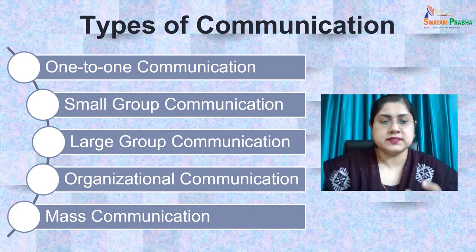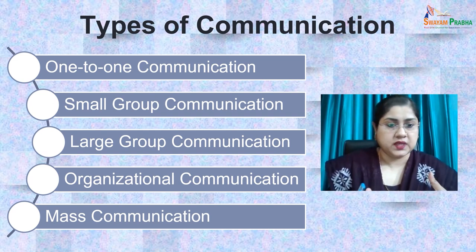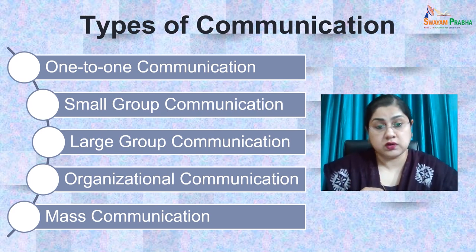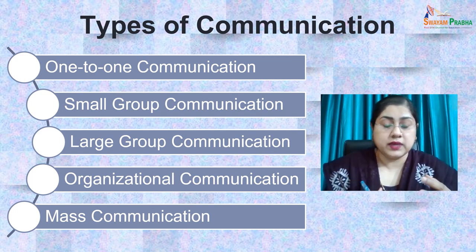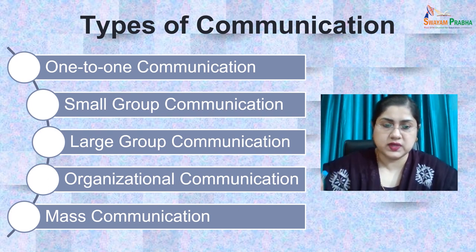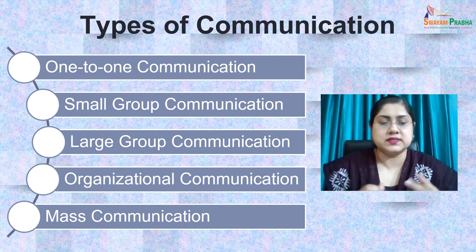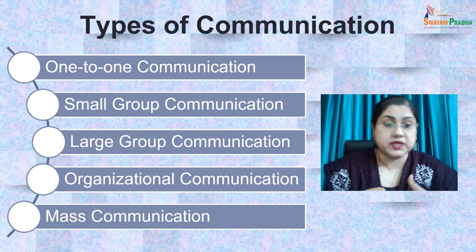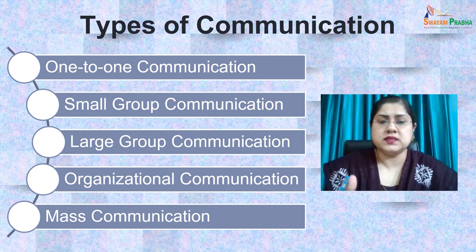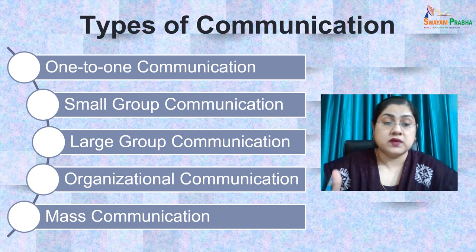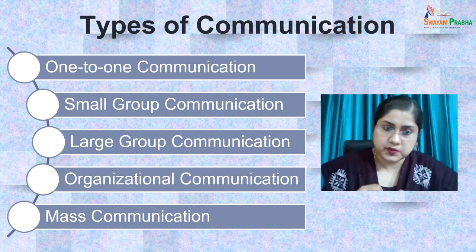So first of all, let us see what are the different types of situations in which communication can happen. There may occur a variety of situations or environments in the process of communication where a lot of individuals are involved, or maybe one individual is interacting with another at a time. Whenever there is interaction, we can say that some sort of communication is happening.